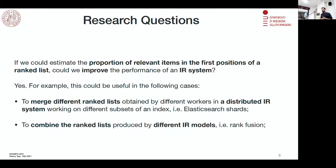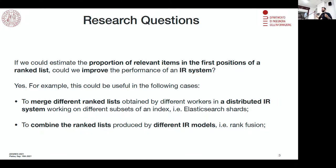Another situation that could benefit is an IR model that relies on an ensemble of other models. In this case, different retrieval models all perform retrieval on the same collection. We would estimate the proportion of relevant documents that each retrieval model collects for a certain user query. Certain retrieval models might be better than others for certain queries. If we could estimate which model produces the highest proportion of relevant documents for a given query, we could improve the overall IR pipeline significantly.